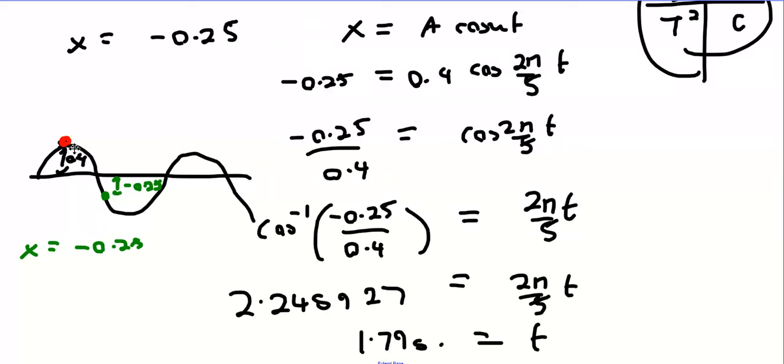Then it's at the central point or the equilibrium position, halfway between high tide and low tide. Then it has to drop another 0.25 to be 0.65 away from high tide. So that's where we got the x equals minus 0.25.